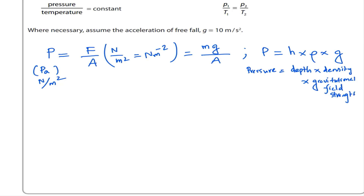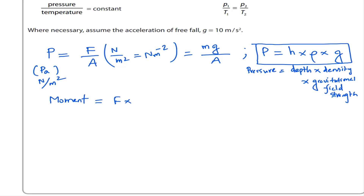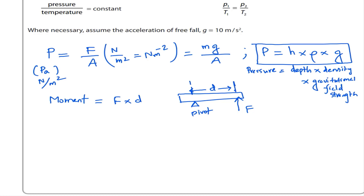Moment equals force times perpendicular distance from the pivot. The moment equals force times perpendicular distance from the line of action of the force to the pivot. The unit of moment is newton meter.